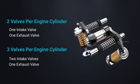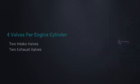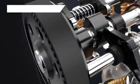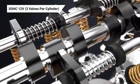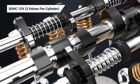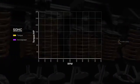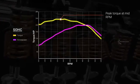SOHC design typically allows a two or three valves per cylinder configuration — usually one valve for intake and one for exhaust, or two valves for intake and one for exhaust. However, current industrial competencies allow production of four valves per cylinder using SOHC. Due to the reduced components, design complexity and manufacturing cost is comparatively low. Since the valve train mass is lesser, SOHC engines tend to produce more torque at low to mid RPM and provide improved fuel efficiency.